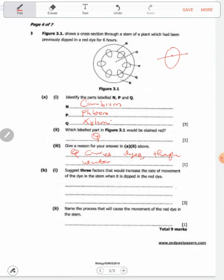Suggest three factors that would increase the rate of movement of the dye in the stem: temperature, humidity, and wind speed.